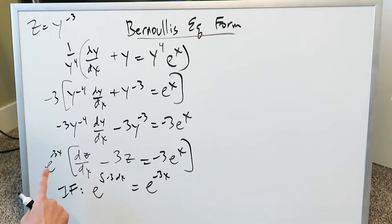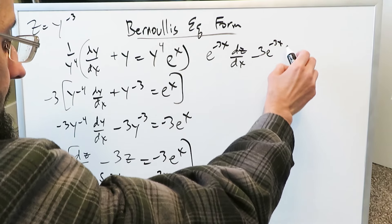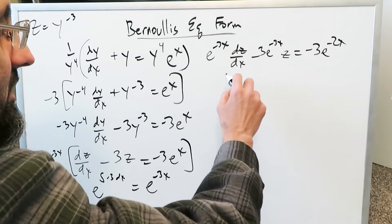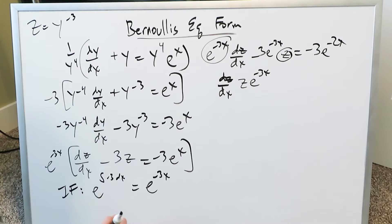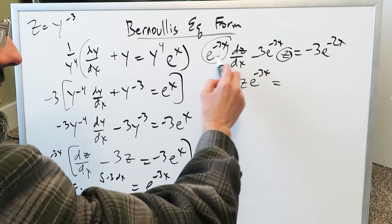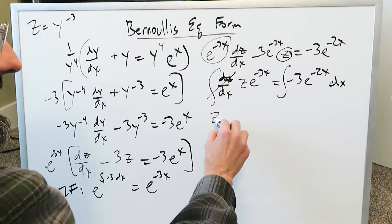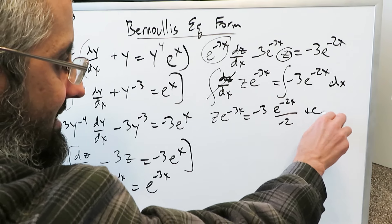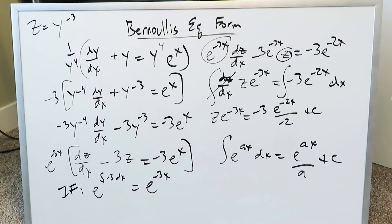Applying e to the minus 3x across gives: e to the minus 3x dz over dx minus 3 e to the minus 3x z equals minus 3 e to the minus 3x times e to the x. Using laws of exponents, e to the minus 3x times e to the x equals e to the minus 2x. The left-hand side is the implicit derivative of z times e to the minus 3x using the product rule. So d/dx of z e to the minus 3x equals minus 3 e to the minus 2x. Integrating both sides: z e to the minus 3x equals minus 3 times e to the minus 2x over minus 2 plus c, using the template that the integral of e to the ax dx equals e to the ax over a plus c.